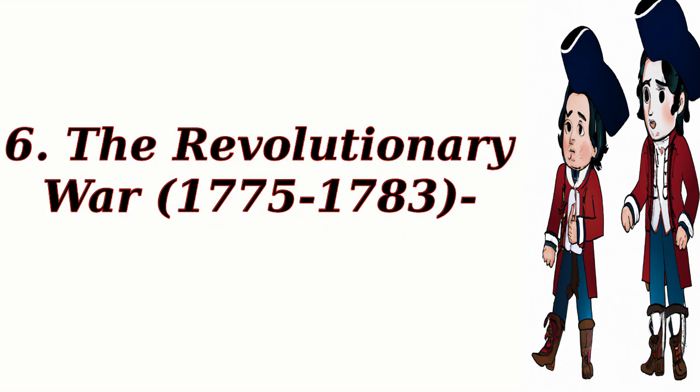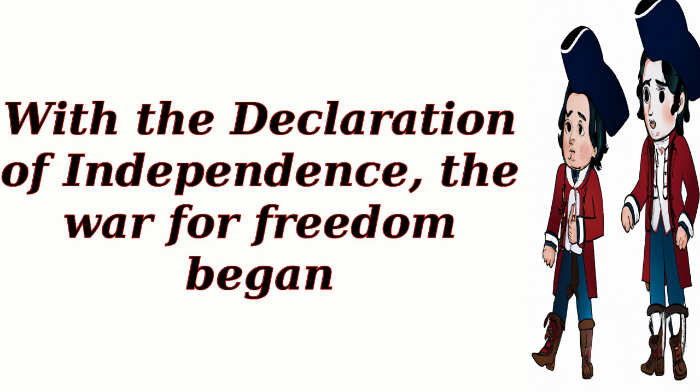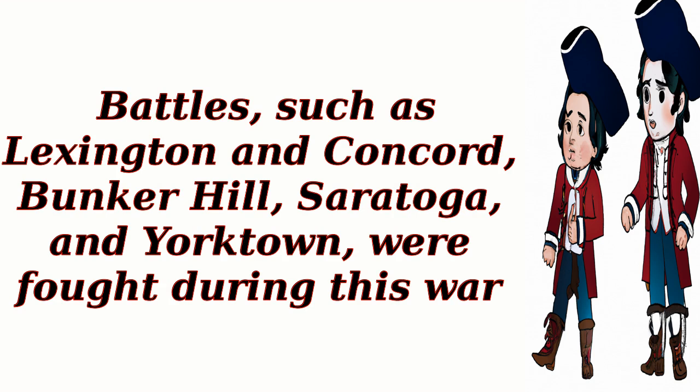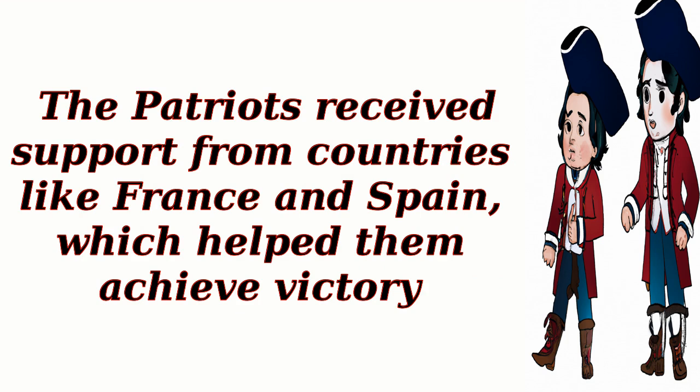6. The Revolutionary War, 1775–1783. With the Declaration of Independence, the War for Freedom began. The American colonists, known as Patriots, fought against the British soldiers, also called Redcoats or Loyalists. Major battles such as Lexington and Concord, Bunker Hill, Saratoga, and Yorktown were fought during this war. The Patriots received support from countries like France and Spain, which helped them achieve victory.